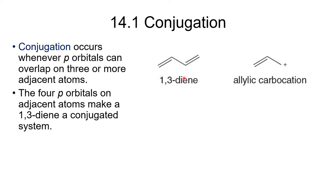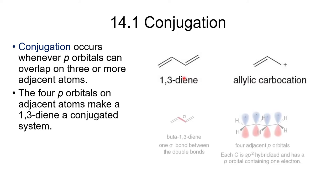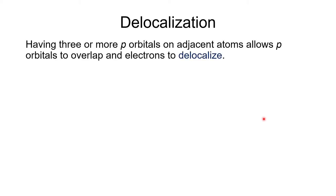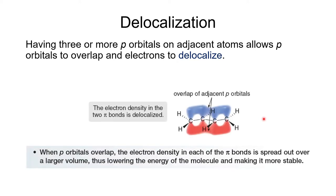The four p orbitals on the carbons in the 1,3-diene system overlap, giving us an extended pi system. In order to have delocalization, we need three or more p orbitals on adjacent carbon atoms — they must be adjacent. The 1,3-butadiene system meets these requirements: all four carbons are sp2 hybridized, so they all have p orbitals that are capable of overlapping.